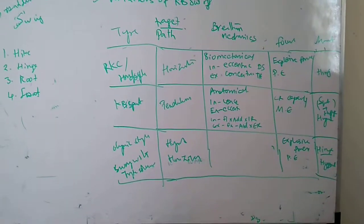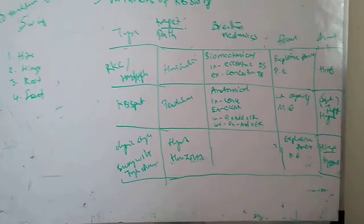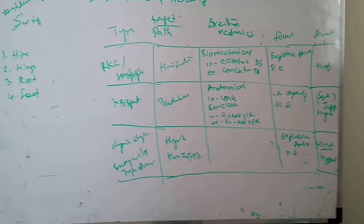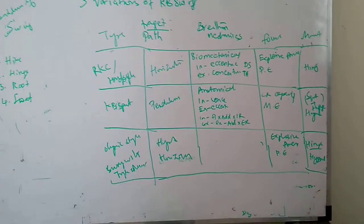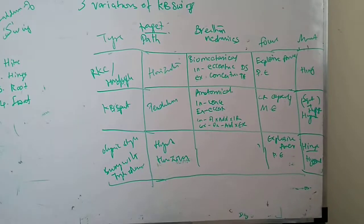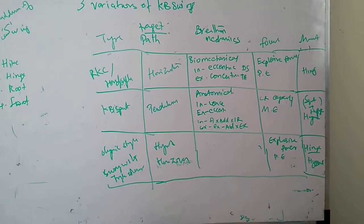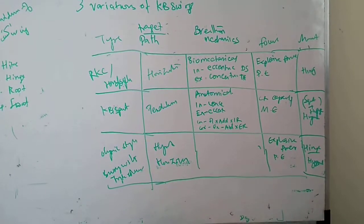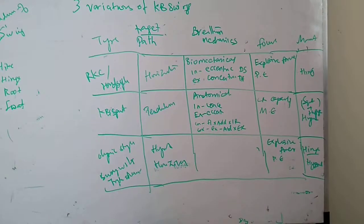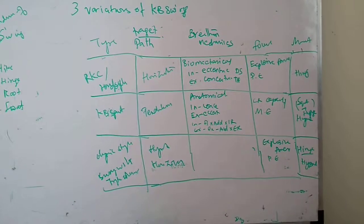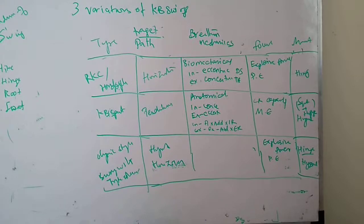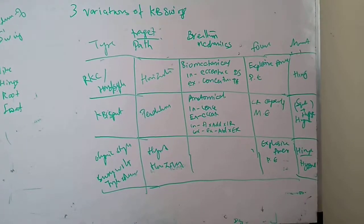So next one is the kettlebell sport style of swing. The path of the bell is in a pendulum to and fro motion. Breathing is anatomical, that is you inhale during the concentric and exhale during the eccentric. See, anatomically inhale as we extend, abduct, and externally rotate, and exhale during flexion, adduction, and internal rotation.